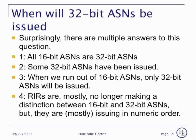When will 32-bit AS numbers be issued? First, all 16-bit AS numbers map directly into the 32-bit AS number space with leading zeros. Second, RIRs have already begun issuing 32-bit AS numbers to some groups, mostly on a test basis, but there are some in production now. And finally, when we run out of 16-bit AS numbers, only 32-bit ASNs are left to be issued. At this point, RIRs are mostly making no distinction between 16 and 32-bit AS numbers, but are issuing in numeric order, so they won't be issuing 32-bit ASNs other than by special request until we run out of 16-bit AS numbers. Policies vary, so check with your local RIR for details.